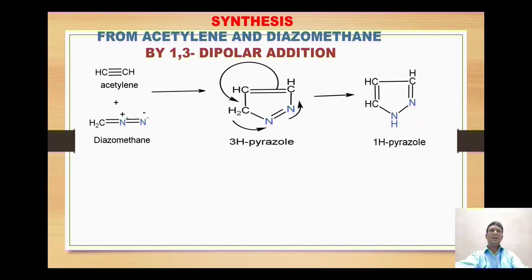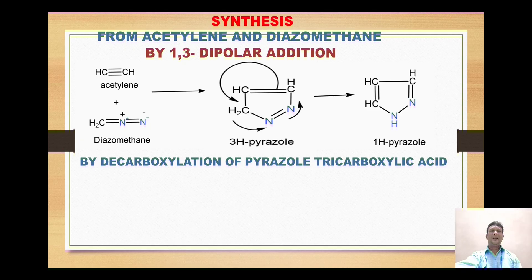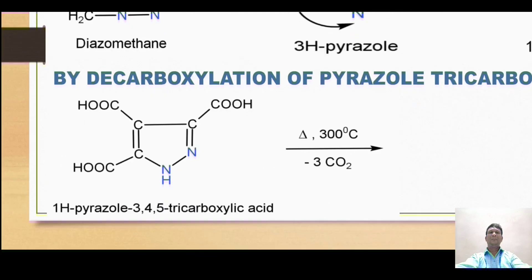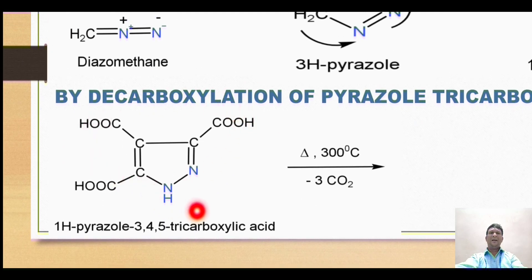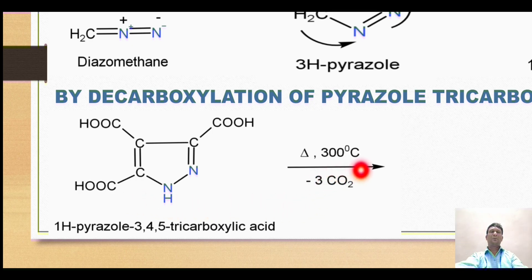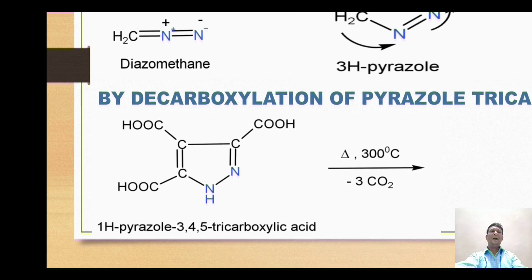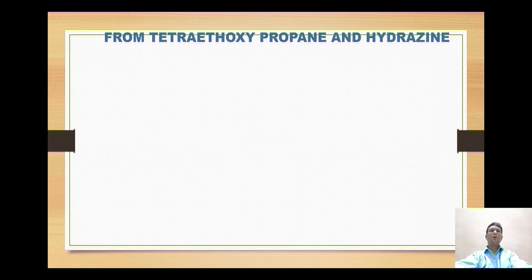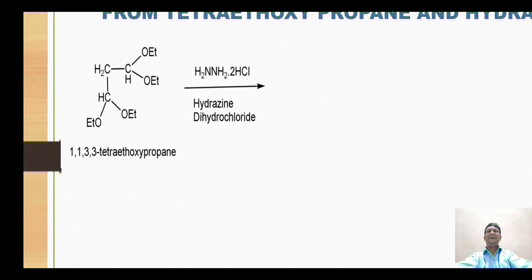The next synthesis is by decarboxylation of pyrazole tricarboxylic acid. The starting material is pyrazole-3,4,5-tricarboxylic acid, which is itself a pyrazole derivative. When heated at a high temperature of 300°C, carbon dioxide molecules are released, giving the formation of 1H-pyrazole.